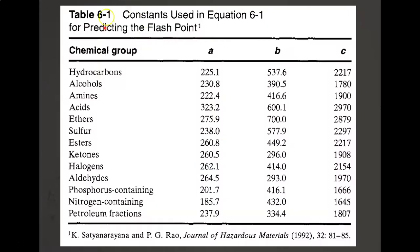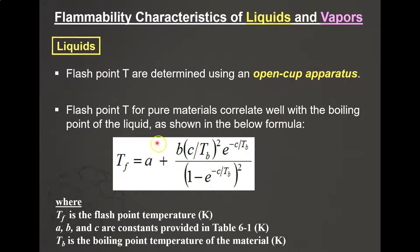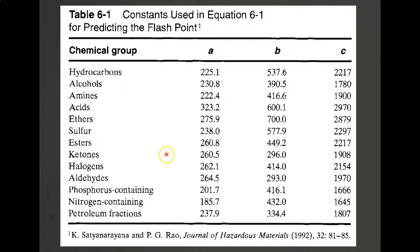The previous equation uses constants listed in Table 6.1 for chemicals such as alcohols, acids, ethers, sulfur compounds, and so on. Once you have the constants A, B, and C, you just need to find the boiling point to calculate your flashpoint. It is a very straightforward equation.